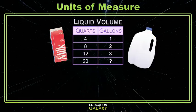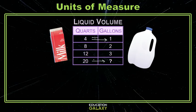Let's try one for volume. You're familiar with milk — maybe you've seen a quart of milk and a gallon of milk. The gallon's bigger, so we're going from the smaller unit to the bigger unit. If you said divide, you are correct. We are given that there are 4 quarts in one gallon, so we can divide by 4. And 20 divided by 4 is 5, so there are 5 gallons in 20 quarts.